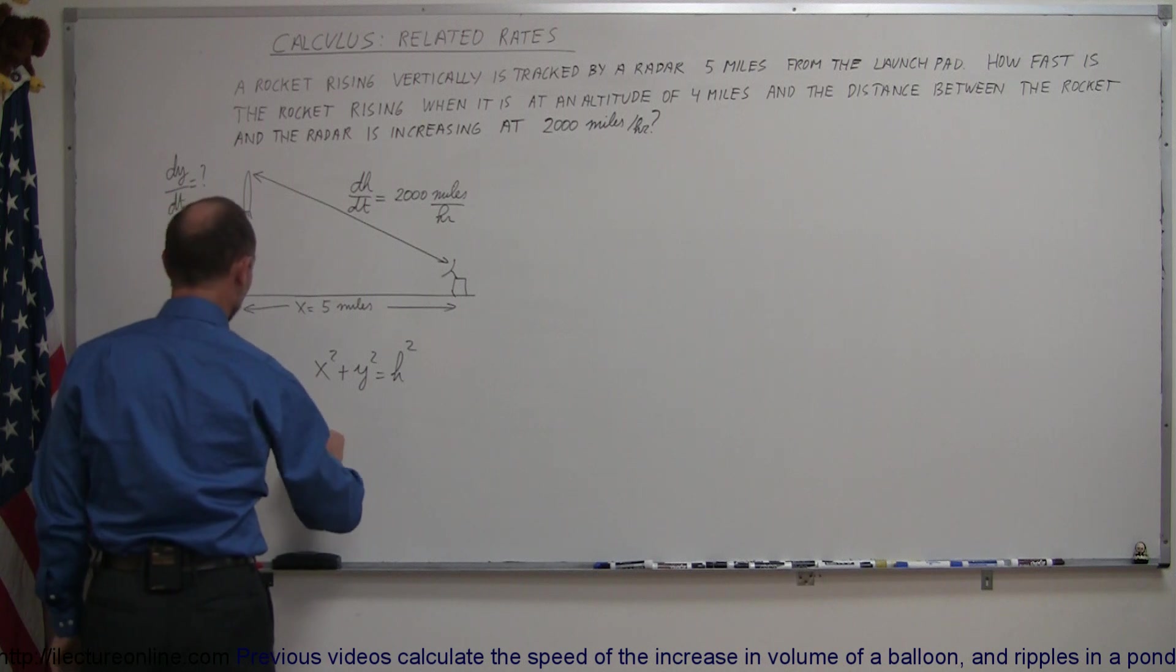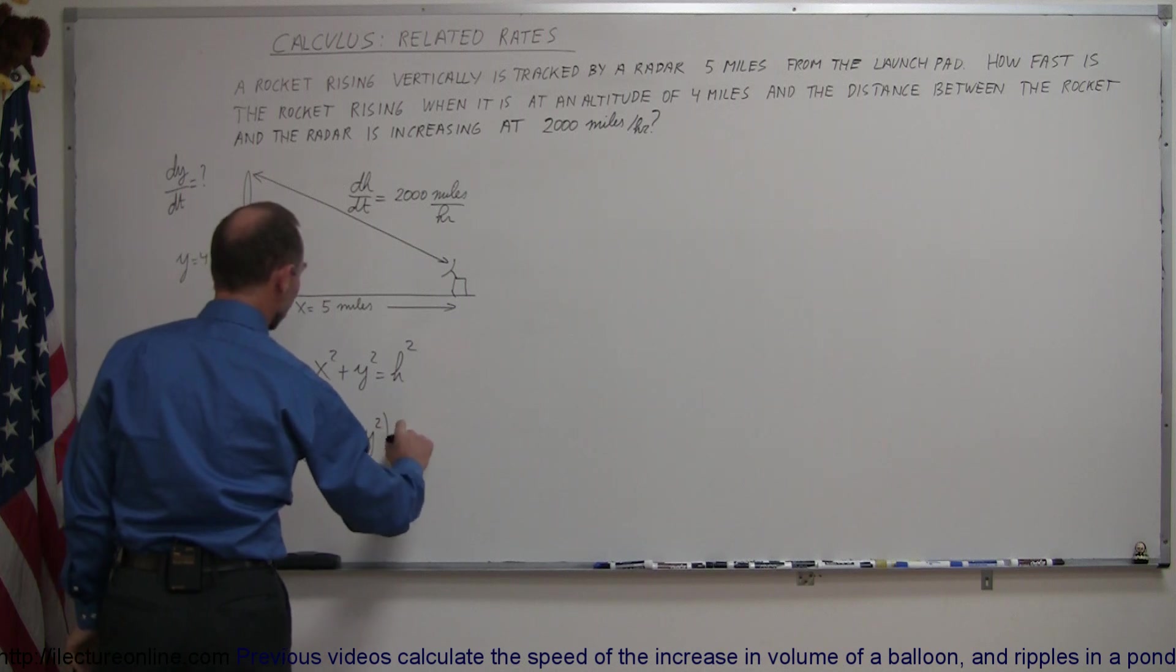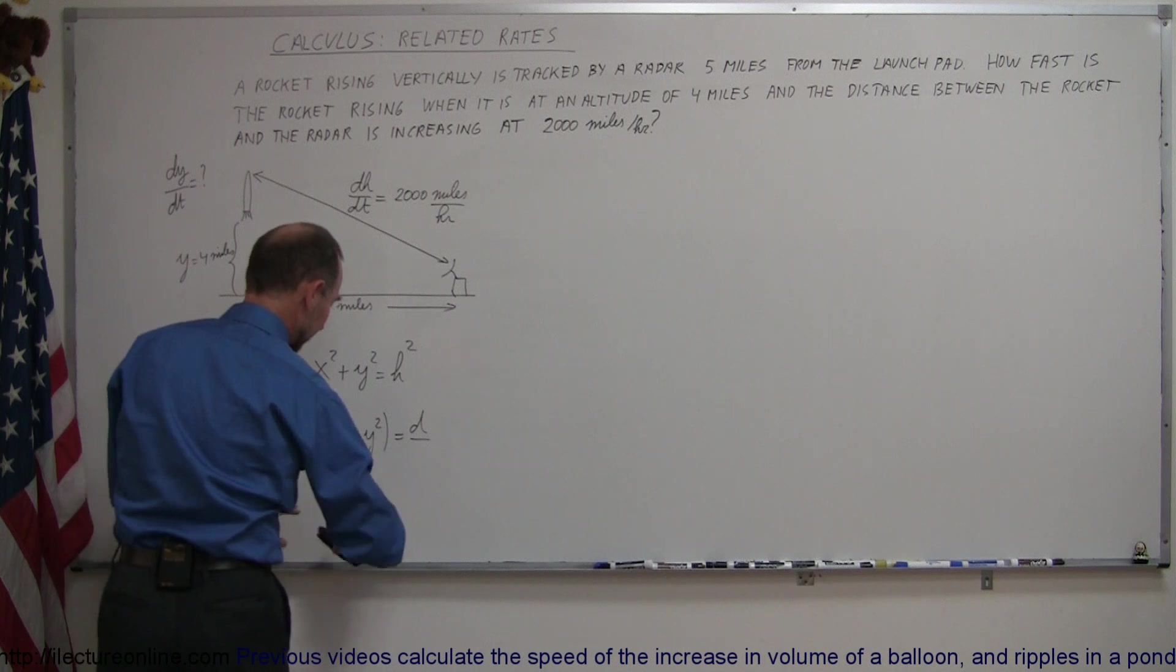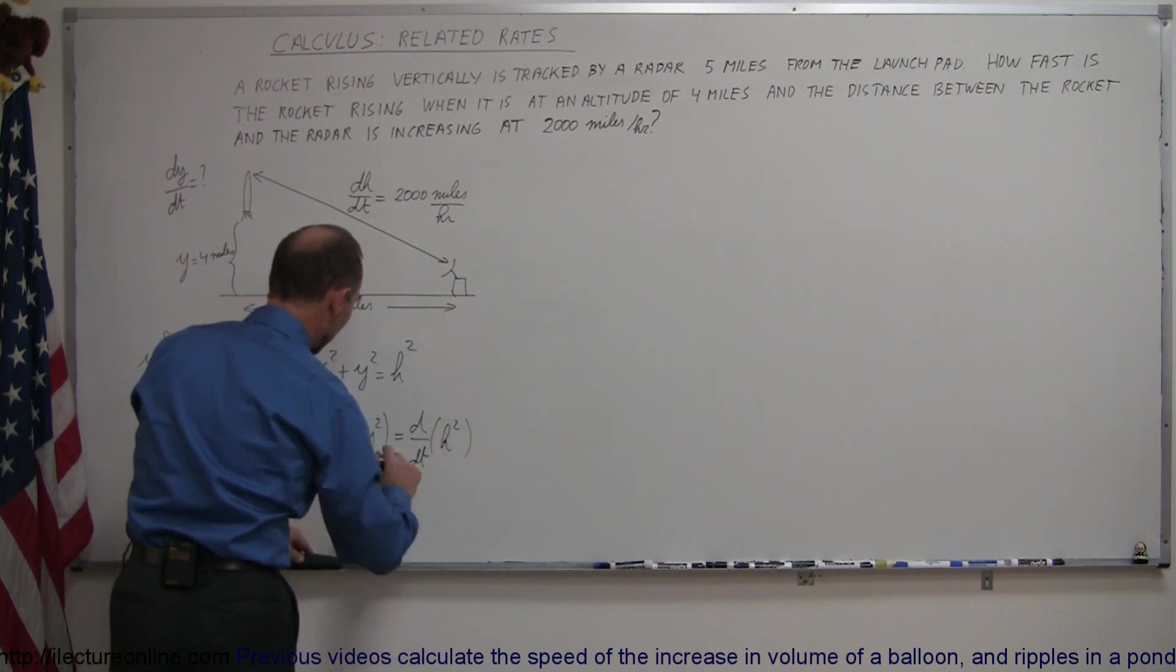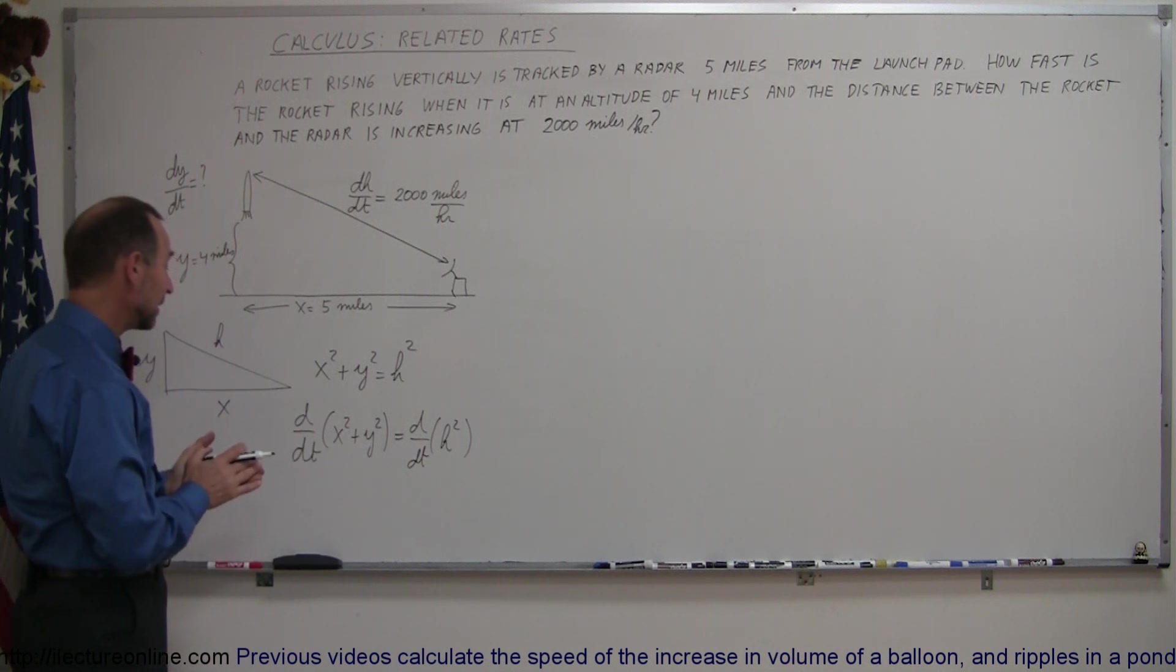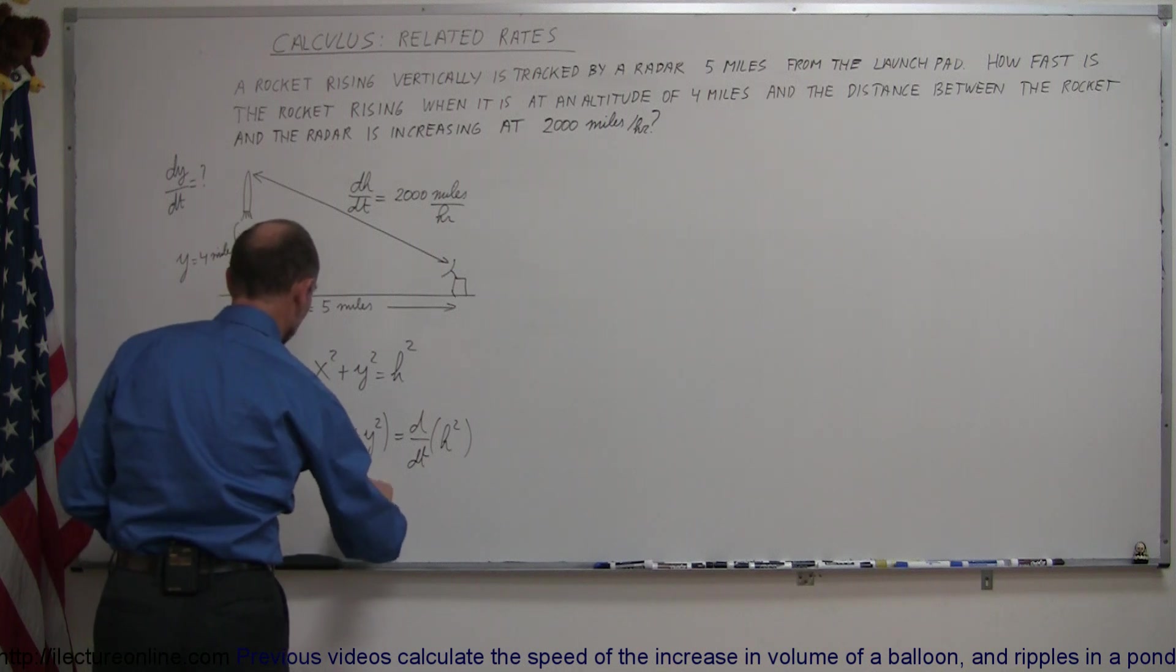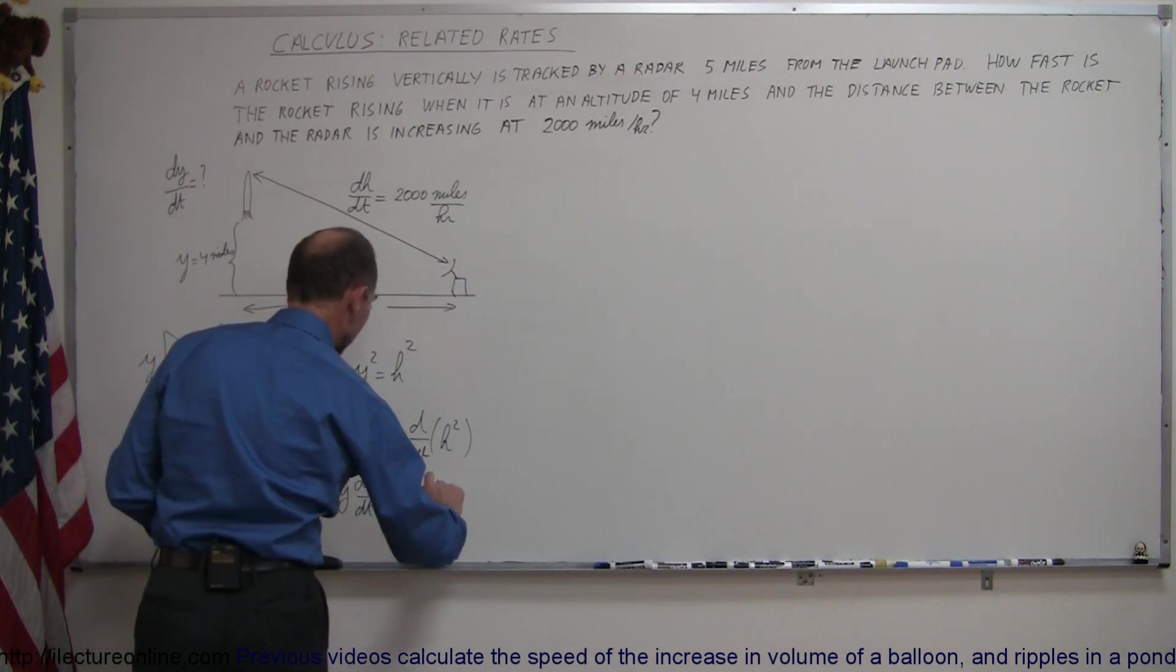We take the d dt of the left side, x squared plus y squared and the d dt of the right side. I get a little ahead of myself here, d dt of h squared. And when we do that, realizing that x is going to be a constant and the d dt of a constant is zero, we end up with 2y dy dt is equal to 2h dh dt.